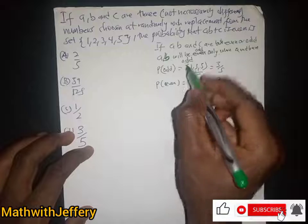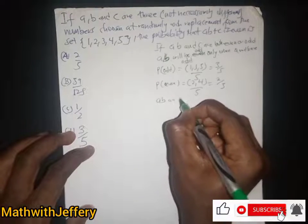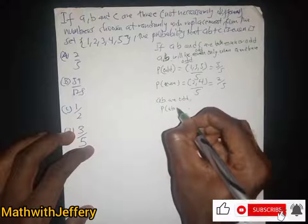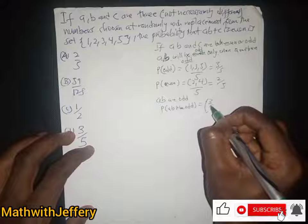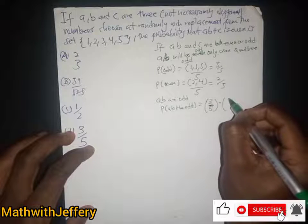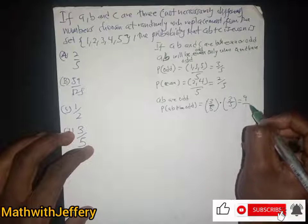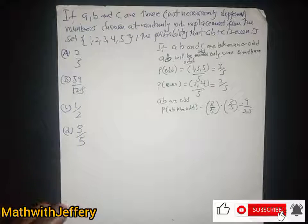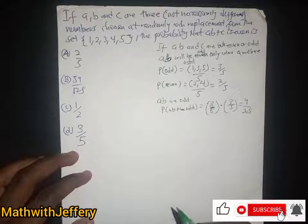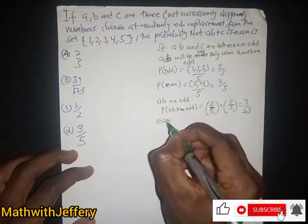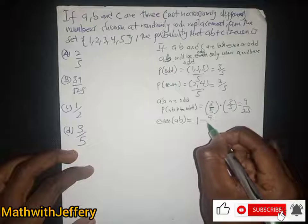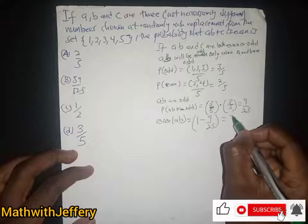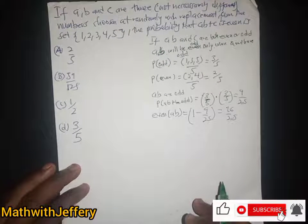Now, a plus b will be odd only when both a and b are odd. The probability of both a and b being odd is 3/5 times 3/5, which gives us 9 over 25. Therefore, the probability that a plus b is even is 1 minus 9/25, which gives us 16 over 25.